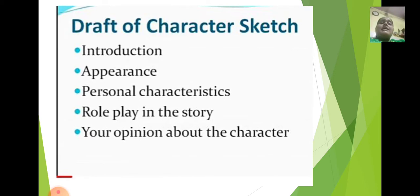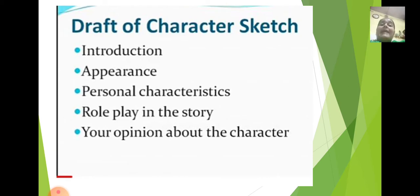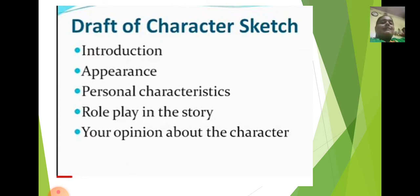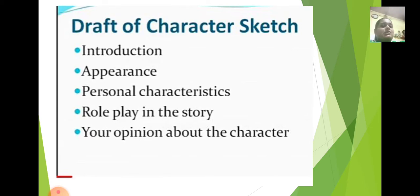Next comes the appearance. In appearance, we will write how does the character look. Suppose you are talking about yourself — I am tall and dark. I like to wear clothes which are of bright colors. So how do you appear? What is your physical appearance? Then the third point is personal characteristics. Personal characteristics means the behavior of the character — how the behavior of the character is, or what special things there are about the character.